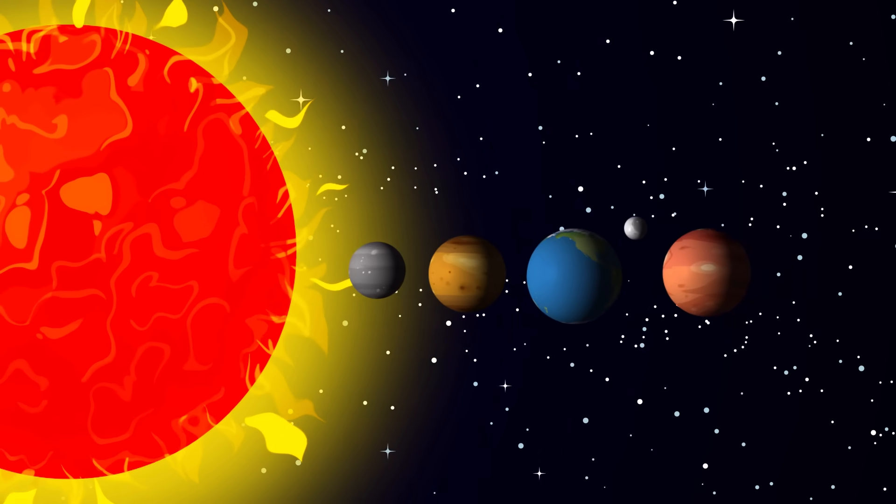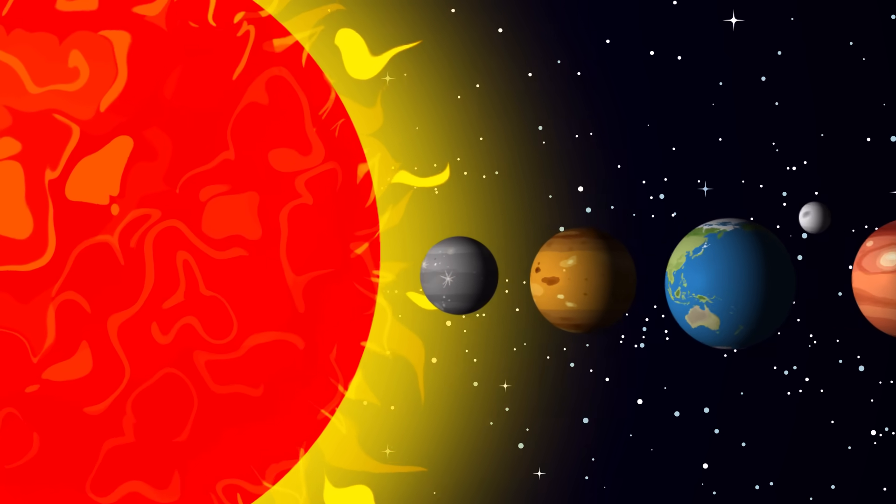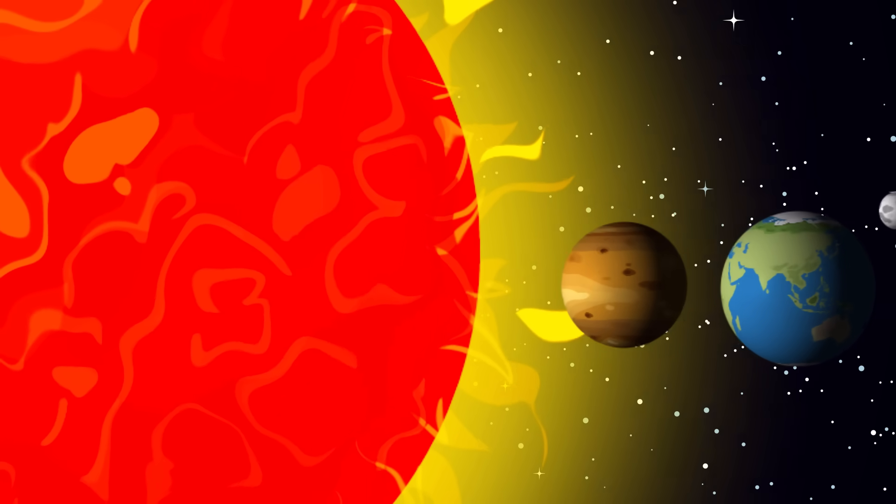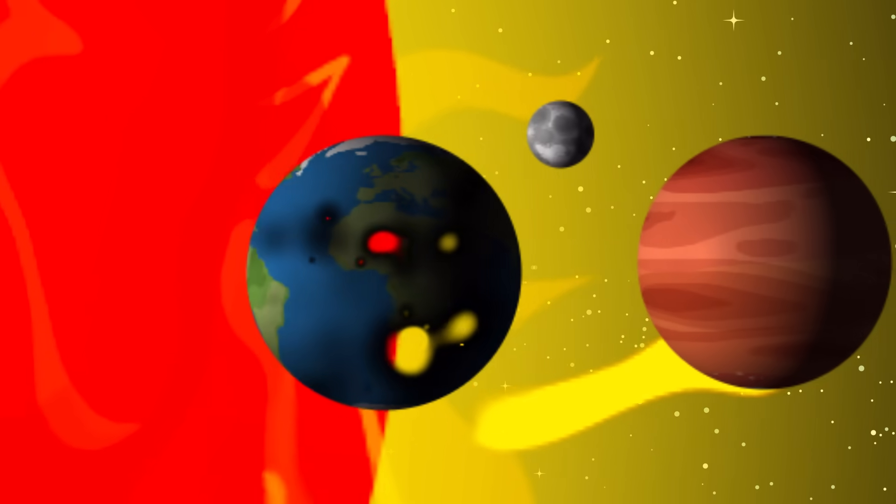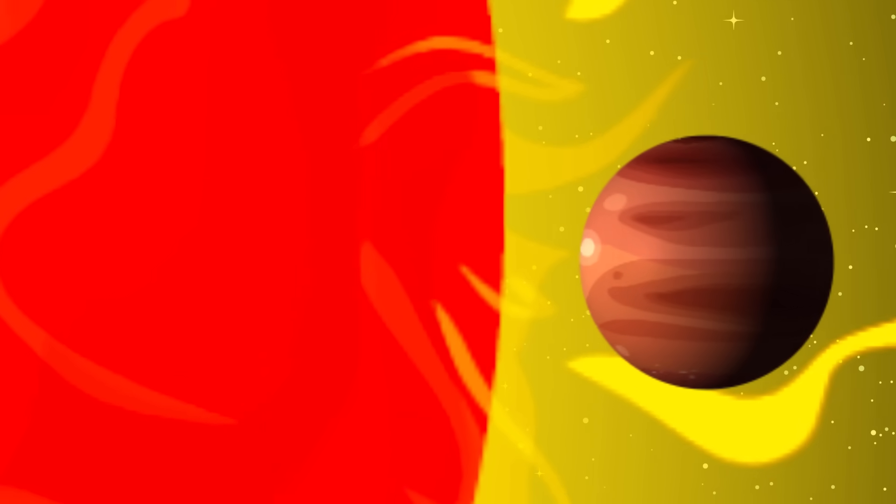The sun will get so big that it'll completely eat up Mercury, Venus, and, yep, Earth, too. Mars will survive, but become a burning hot desert.